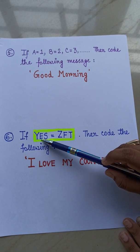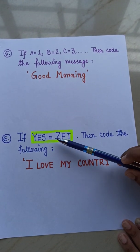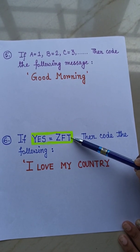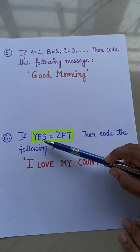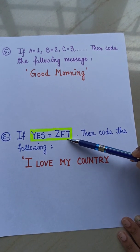Next sum number 6 and the last sum is, if Y, E, S equals to Z, F, T. You will understand how it change. Y becomes Z, E becomes F, S becomes T.